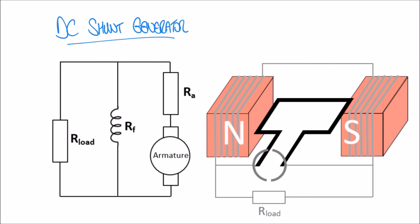The DC shunt generator is different from the DC series generator because the field windings and the armature are in parallel with one another, as we can see in the circuit diagram. We have our armature expressed as a voltage source and a resistance, and in parallel we have our field windings. Connected to both of these we have our load — in this case a resistor — which serves as the output of our circuit.